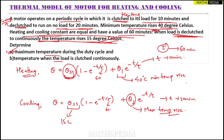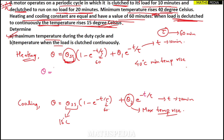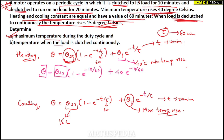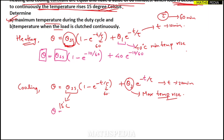For the heating equation: theta equals theta_ss (unknown) into (1 minus e to the power minus 10 by 60) plus theta_1 which is 40 degrees Celsius times e to the power minus 10 by 60. In this equation both theta_ss and theta are unknown. For the cooling equation: theta equals 15 into (1 minus e to the power minus 20 by 60) plus theta_2 times e to the power minus 20 by 60, where theta_2 is also unknown.